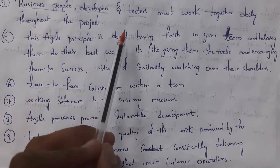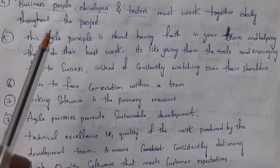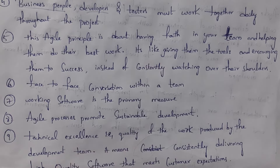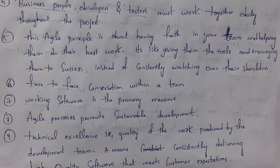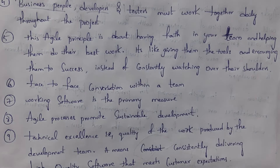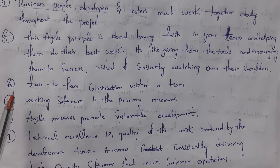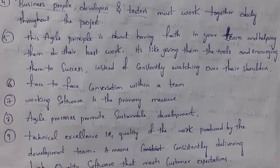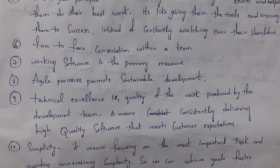The fifth principle is about having faith in your team and helping them do their best work — giving them tools and encouraging them to succeed instead of continuously watching over their shoulders. In agile model, the product manager will not force employees but gives them freedom to work. The sixth principle is face-to-face conversation — all employees including business people, developers, and testers will conduct face-to-face meetings.